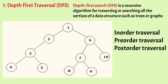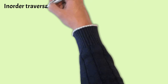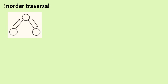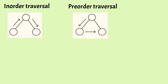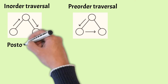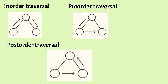In in-order traversal, first visit all nodes in the left subtree, then visit the root node, then visit all nodes in the right subtree. In pre-order traversal, visit the root node first, then visit all nodes in the left subtree, then visit all nodes in the right subtree. In post-order traversal, visit all nodes in the left subtree, then all nodes in the right subtree, and then visit the root node.